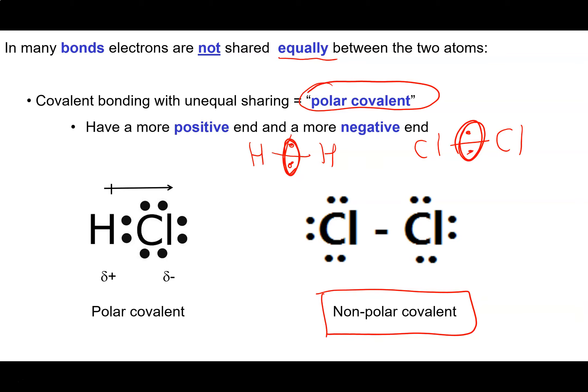Now if I combine these two and I form a bond between a hydrogen atom and a chlorine atom, it turns out that electrons have a greater affinity for chlorine than they do for hydrogen. So the two electrons that hold these atoms together are not shared equally. They spend more time closer to chlorine than they do to hydrogen.